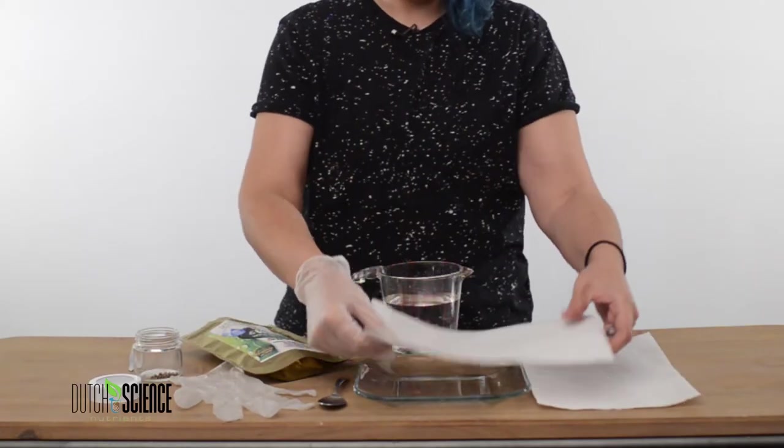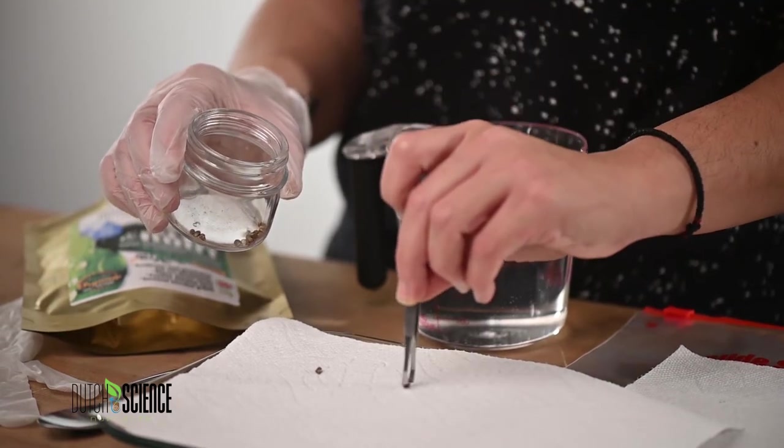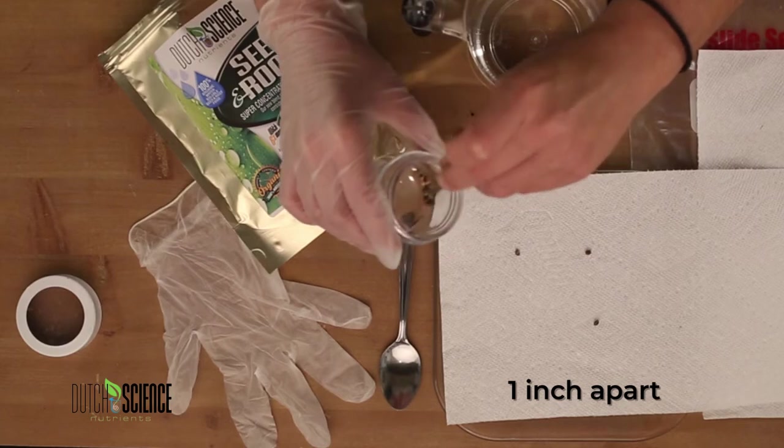You want to grab your plate and place your paper towel on top. Grab your seeds and place them on the towel about an inch apart. It's best to use either tweezers or plastic gloves so that you avoid getting any excess oils on them.